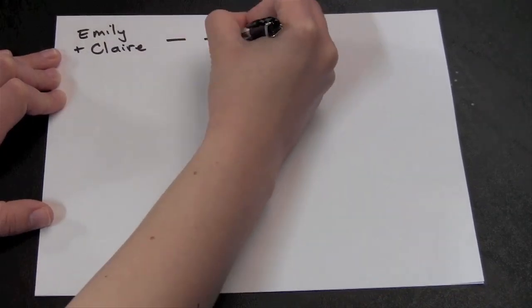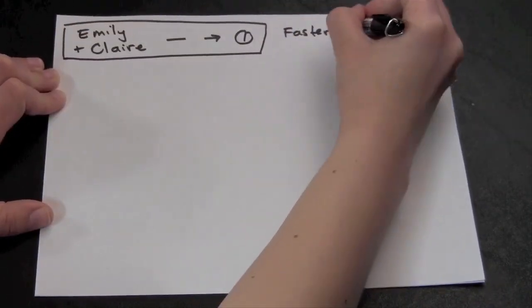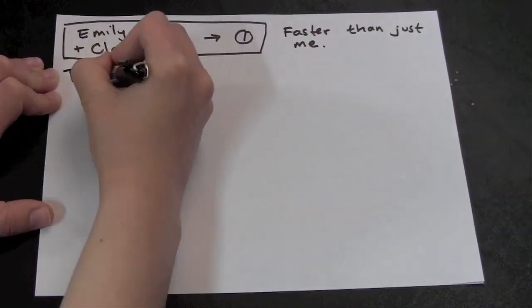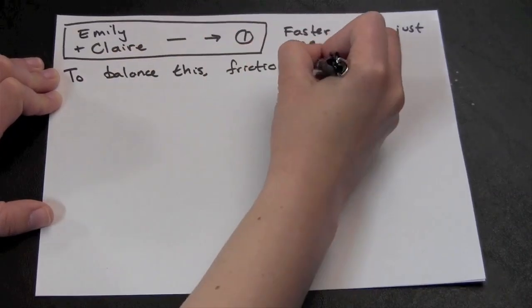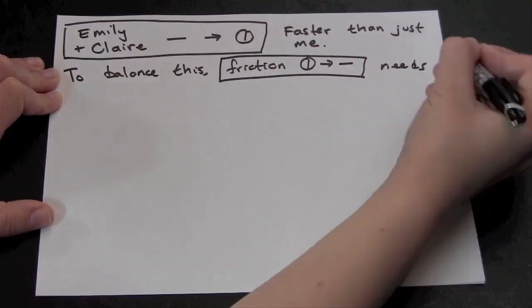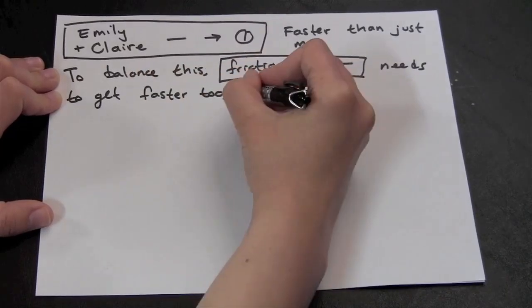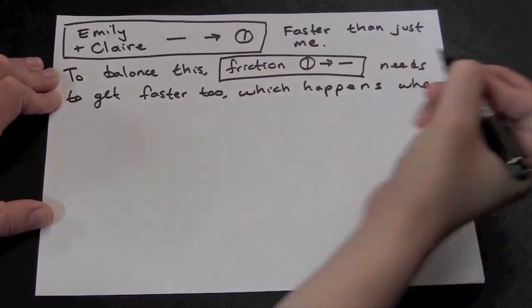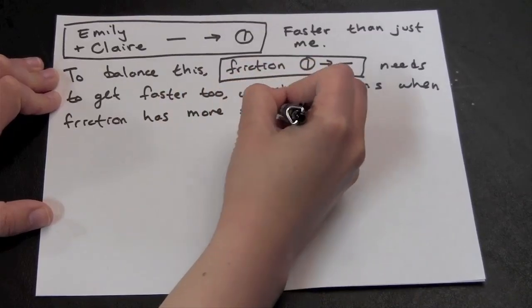So how is this actually working? My sister Claire and I can spin coins up faster than I could alone. To balance this, friction needs to knock coins down faster too. This happens when friction has more spinning coins on the table to knock down.